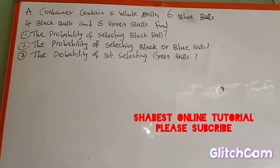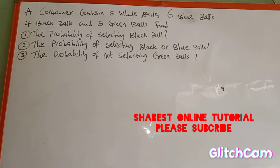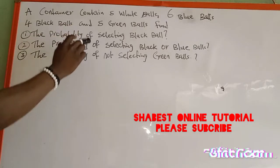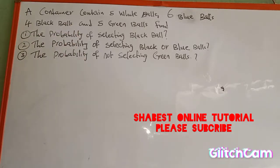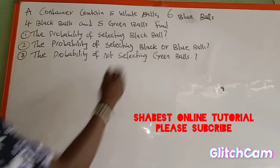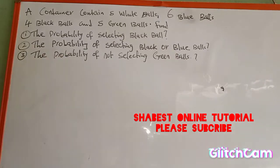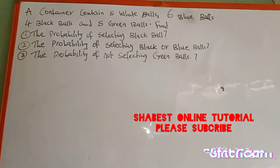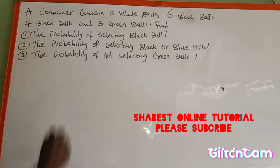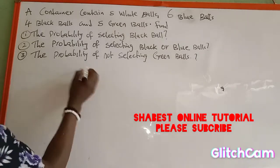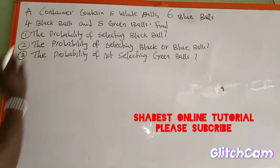Hello viewers, welcome once again to my channel. In today's tutorial we are going to provide a solution to this probability question on the board. The question says a container contains five white balls, six blue balls, four black balls, and five green balls. We are asked to find: (1) the probability of selecting a black ball, (2) the probability of selecting a black or blue ball, and (3) the probability of not selecting a blue ball.